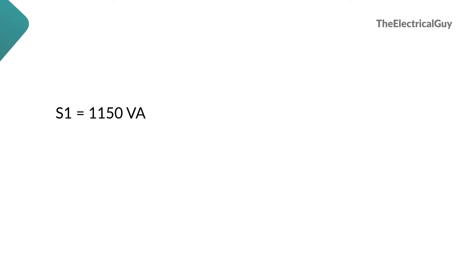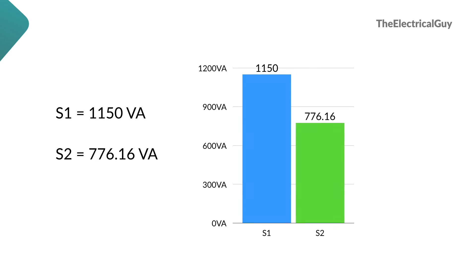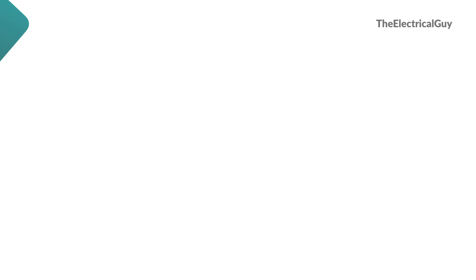In the first case, the motor was drawing 1150 VA. After adding the capacitor, it has dropped to 776.16 VA — a drop of 32% in power consumption, which is a great saving. The power factor improved from 65% to 96%, an increase of 31%, just because of the addition of one capacitor.